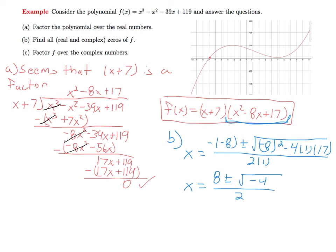This confirms—the fact that we have a negative underneath here confirms that we can't factor the quadratic any further over the real numbers.